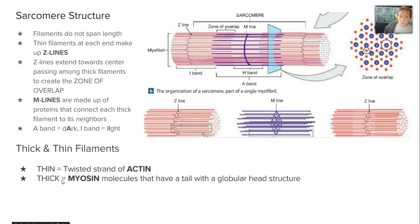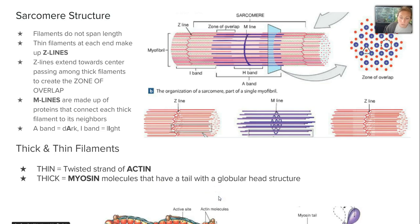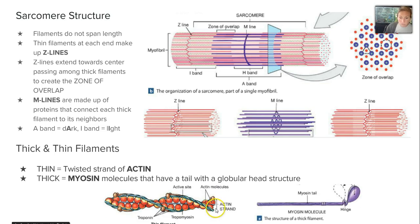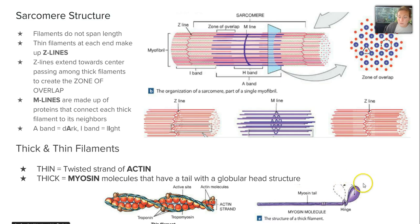There are thick and thin filaments. The thin filaments are actually twisted strands of actin, while the thick filaments are myosin molecules that have a tail with a globular head structure. You can see the actin molecules in the thinner structure and the myosin in the thicker one. The reaction between myosin and actin is what makes our muscle contractions happen — the myosin globular head interacts with the actin molecules to allow us to contract our muscles.